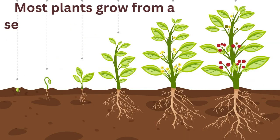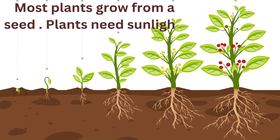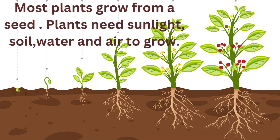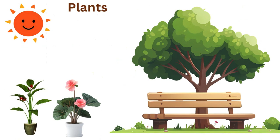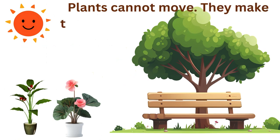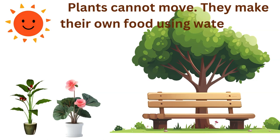Most plants grow from a seed. Plants need sunlight, soil, water, and air to grow. Plants cannot move. They make their own food using water, air, soil, and sunlight.